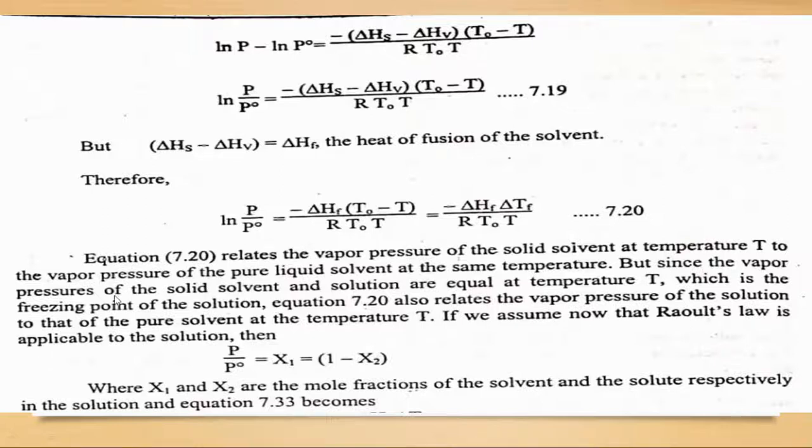But since the vapor pressure of the solid solvent and the solution are equal at temperature T, which is the freezing point of the solution, equation 7.20 also relates the vapor pressure of the solution to that of the pure solvent at temperature T.